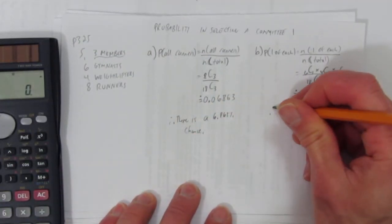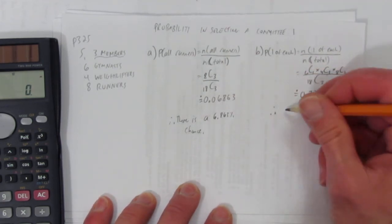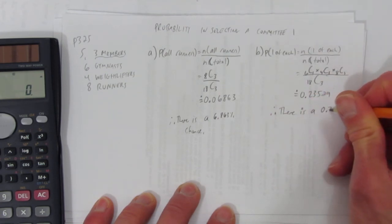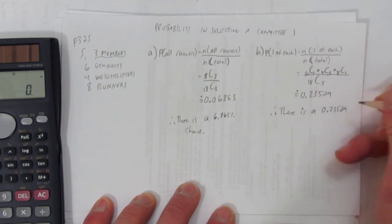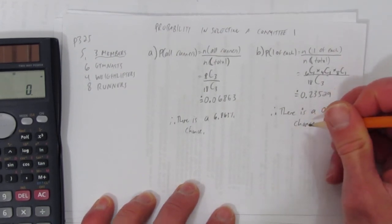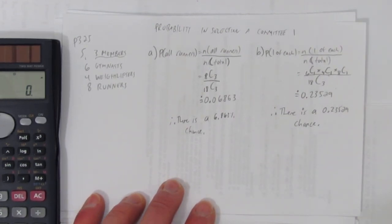And so, it's a word problem. You probably need a word answer. We can leave it as a decimal. Last time I made a percent. You don't have to. There is a 0.23529, that's like 23.529%. But I'll leave it as a decimal chance. And so, this is an example of how to use probability when selecting a committee.